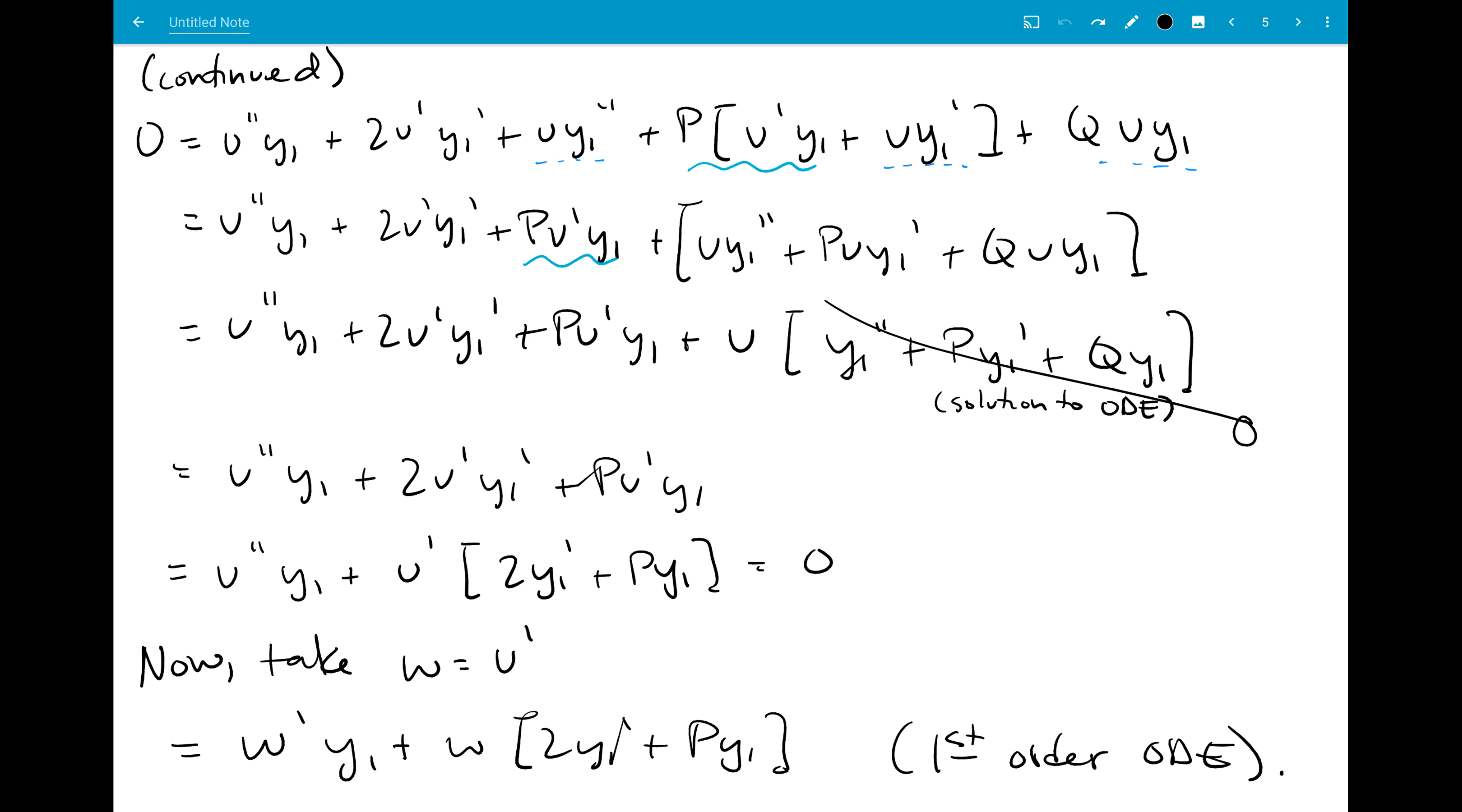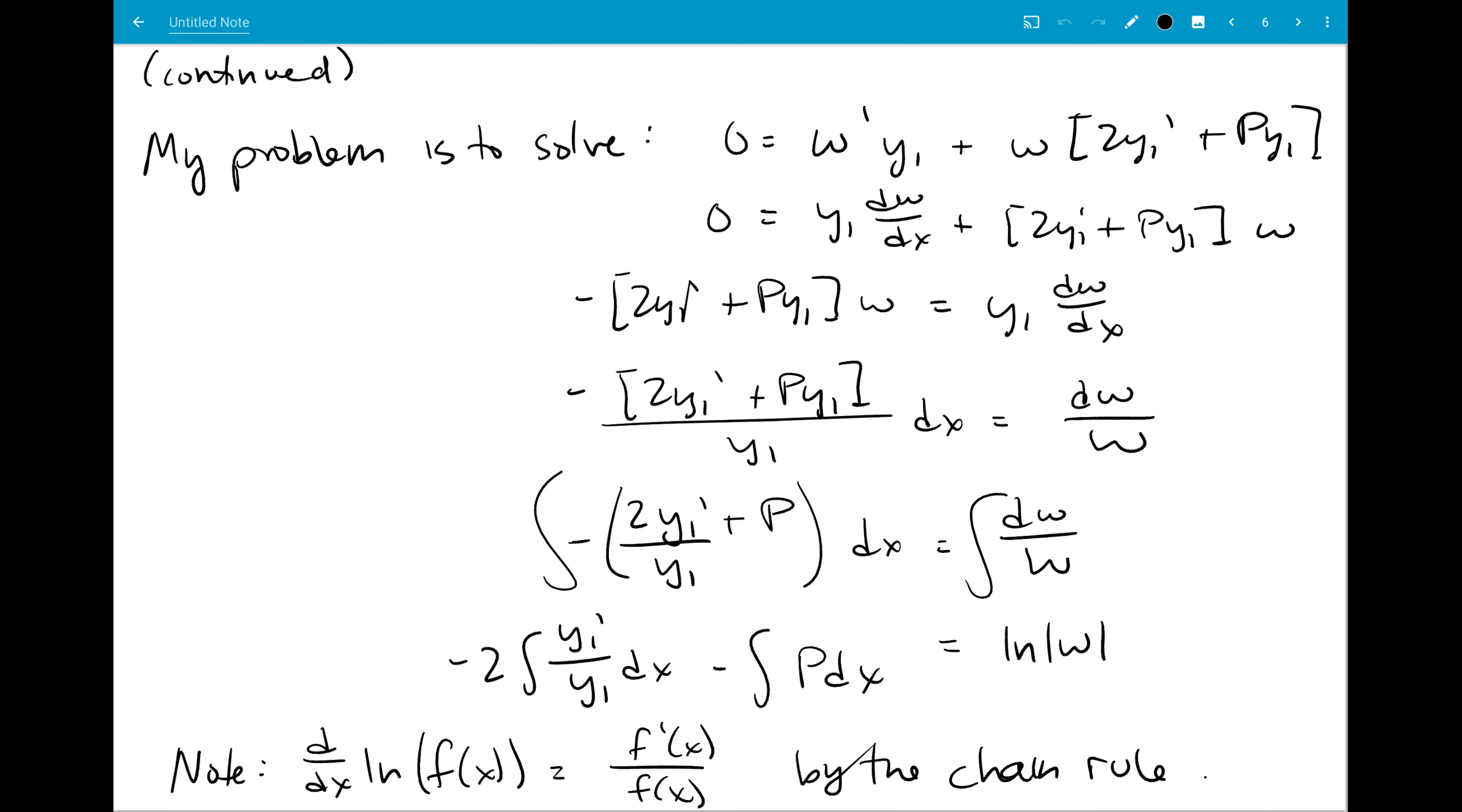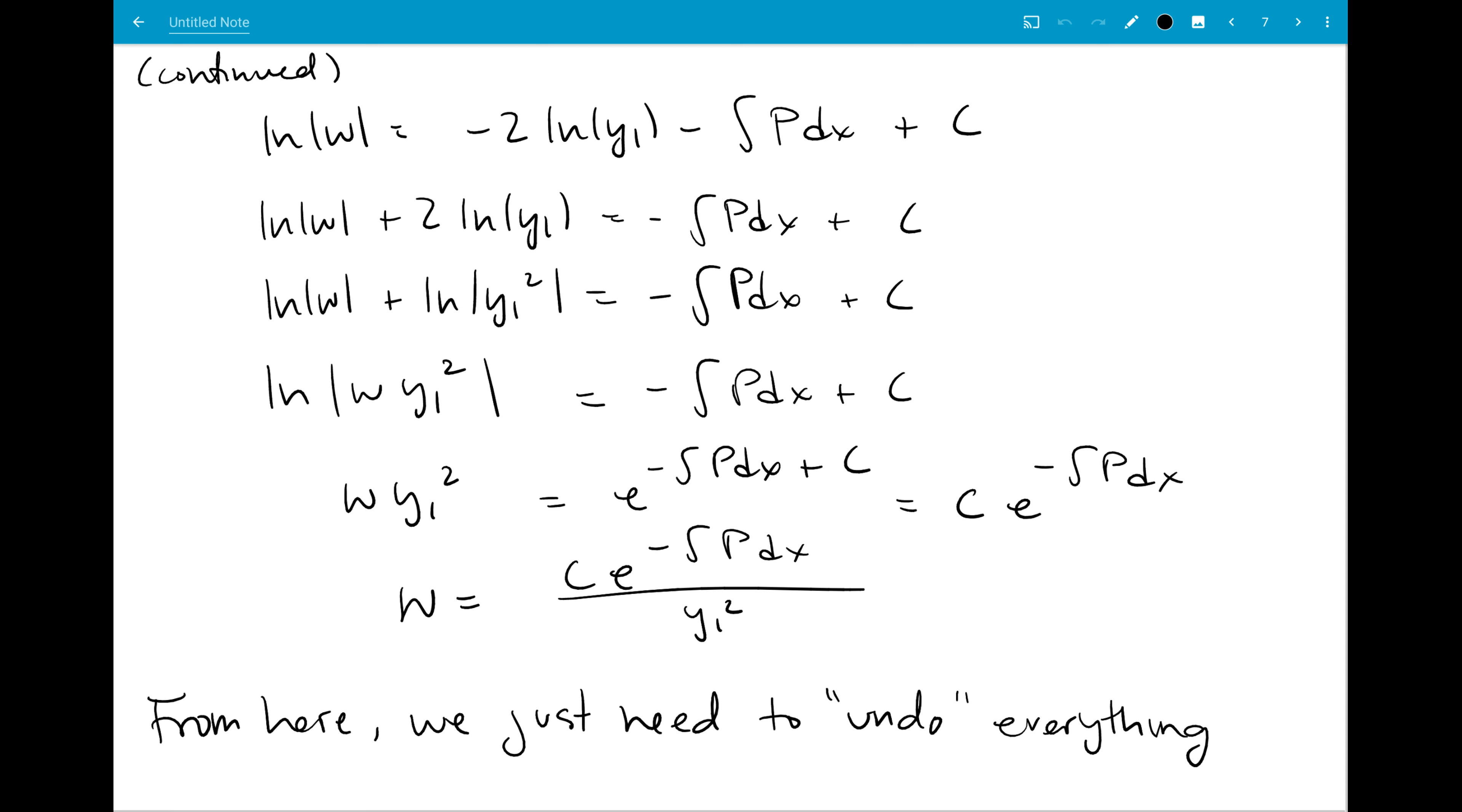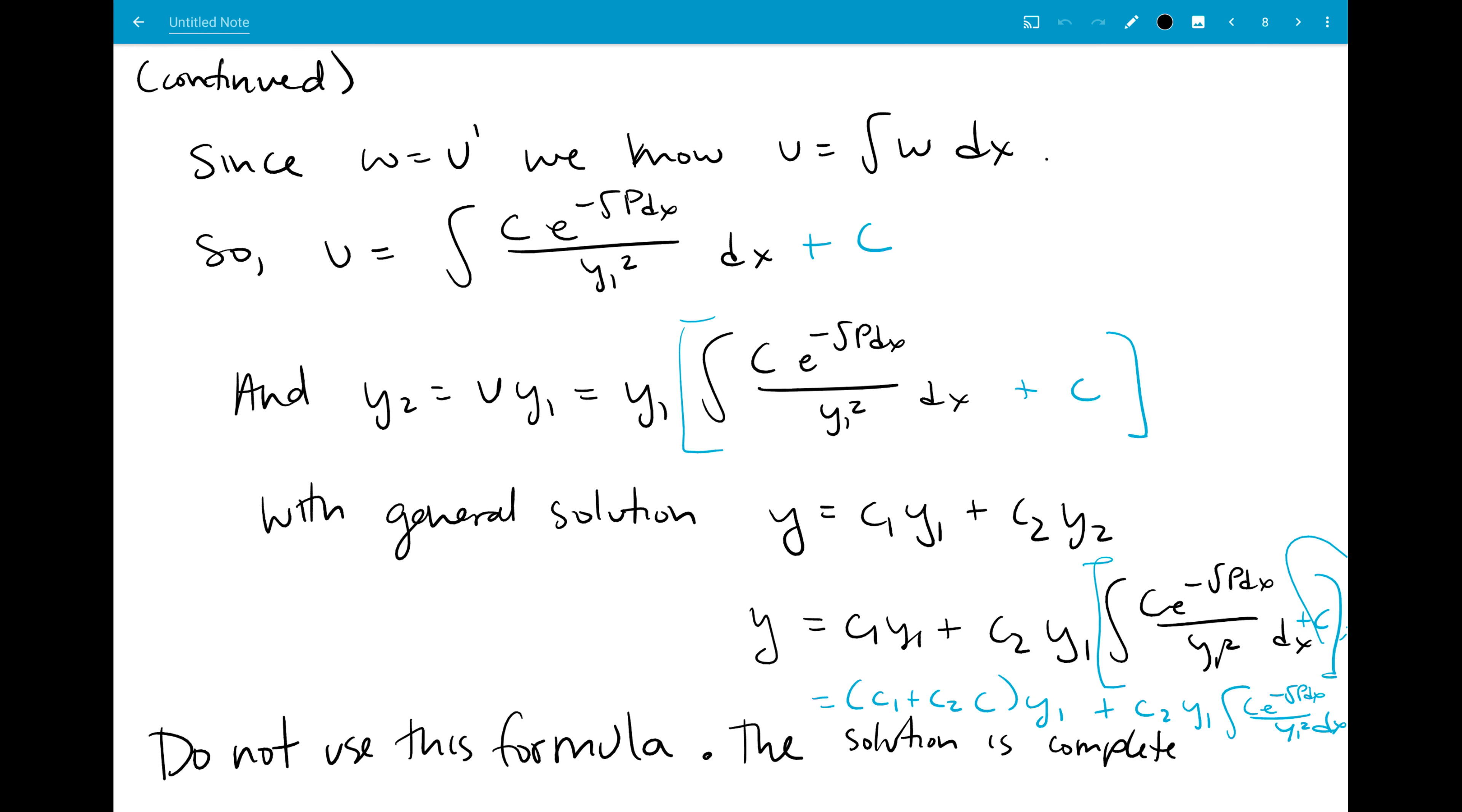And then after everything dropped out, we started our reduction of order part, where we solved a differential equation for w. I did separation. A linear equation would have been fine here. And then there were some algebra tricks, but we eventually ended up with what y2 should be.